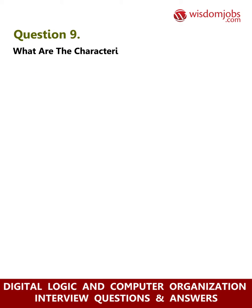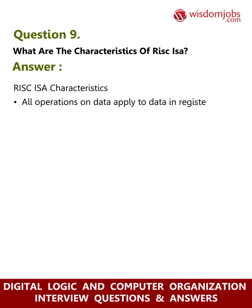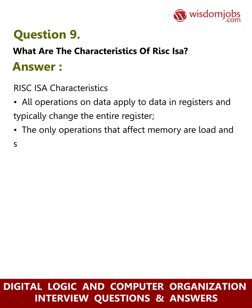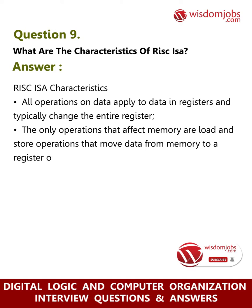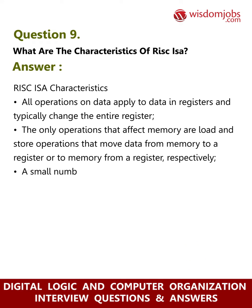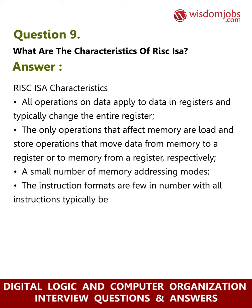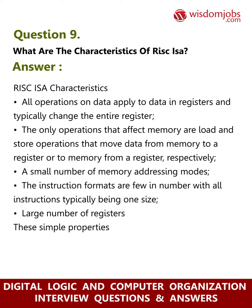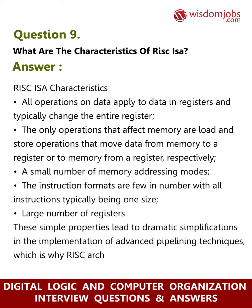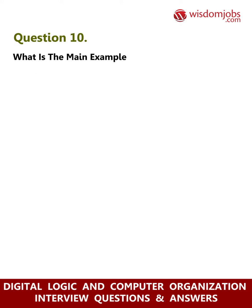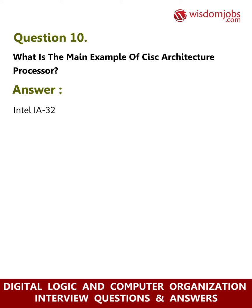Question 9: What are the characteristics of RISC ISA? Answer: All operations on data apply to data in registers and typically change the entire register. The only operations that affect memory are load and store operations. A small number of memory addressing modes. Instruction formats are few in number, with all instructions typically being one size. Large number of registers. These simple properties lead to dramatic simplifications in the implementation of advanced pipelining techniques, which is why RISC architecture instruction sets were designed this way.